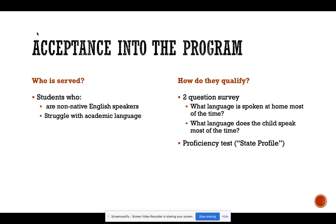To qualify for the ESL program, parents are given a two-question survey. Those two questions are: what language is spoken at home most of the time, and what language does the child speak most of the time? Then the student is given a proficiency test according to state protocol. This test gauges their oral proficiency, and there is a different test for kindergarteners and a different test for those in 1st through 12th grade.